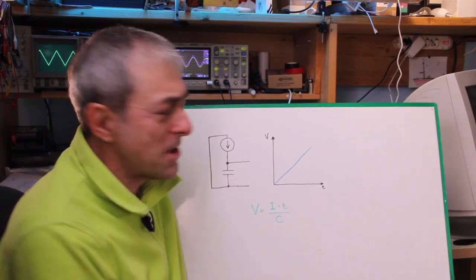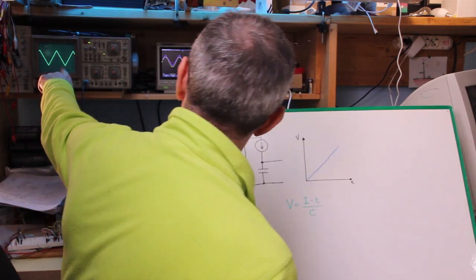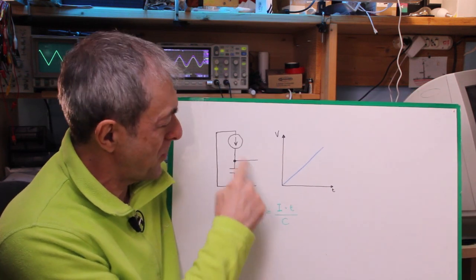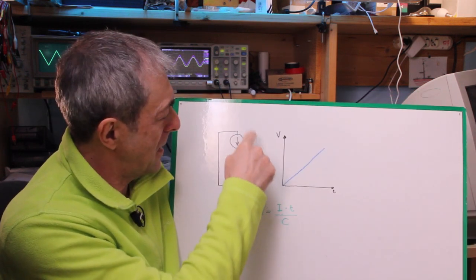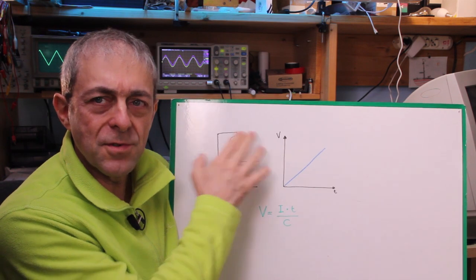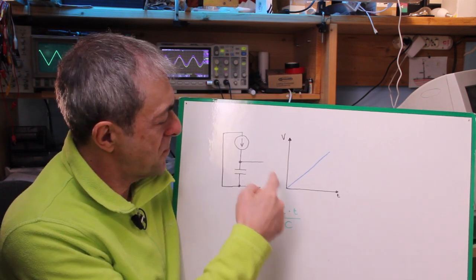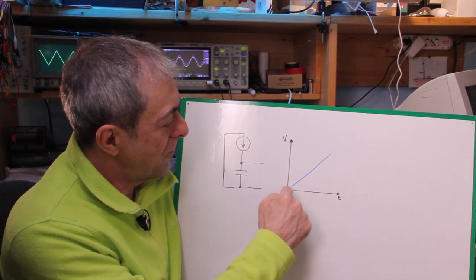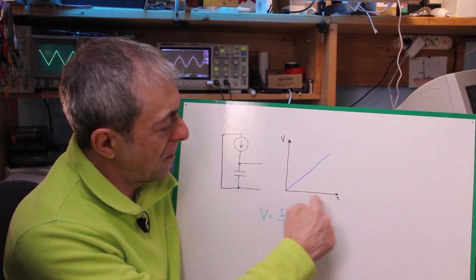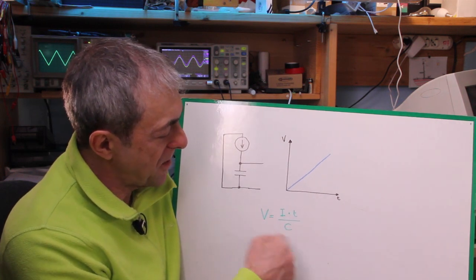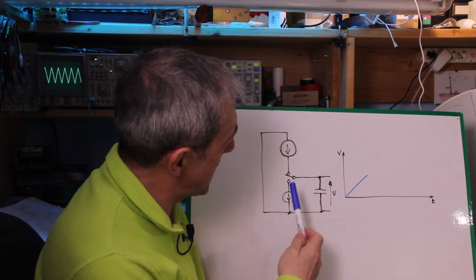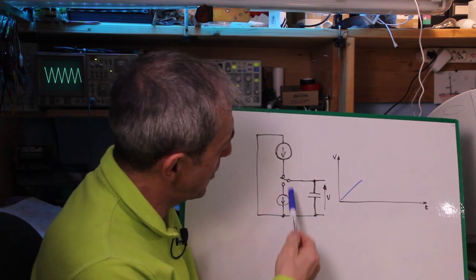Let's get started. The heart of this circuit that generates this beautiful waveform is just a capacitor and a constant current source. This is because the voltage across the capacitor increases constantly over time, following this equation.